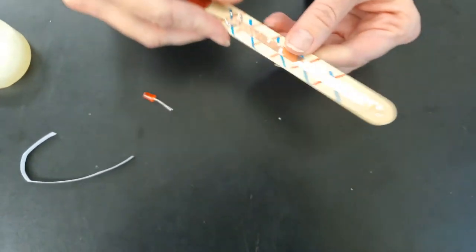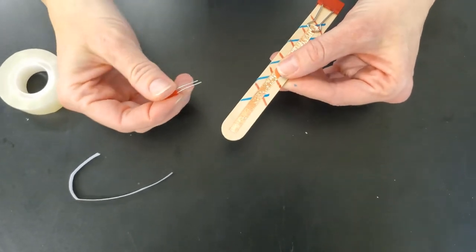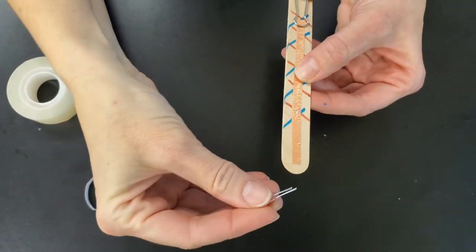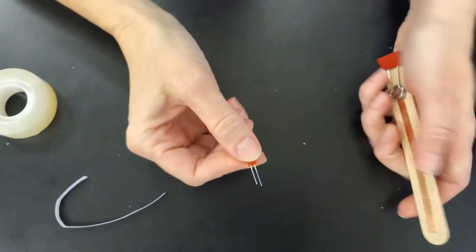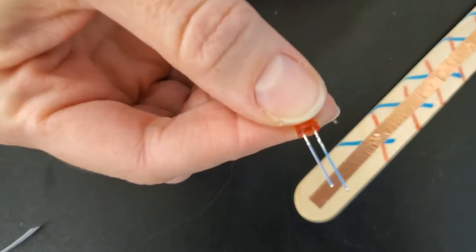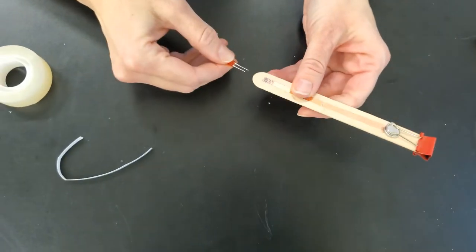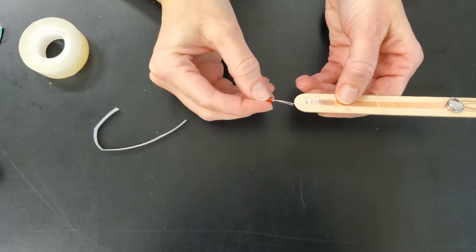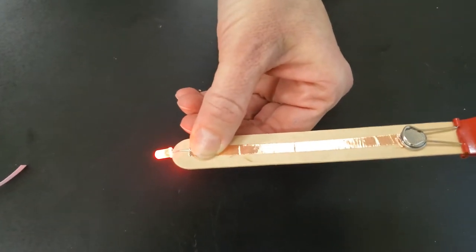Now it's time to add our light bulb. When you are working with electricity, you've got to make sure the positive and negative sides are lined up correctly. This is the cathode and this is the anode. The cathode on an LED light bulb is longer, the anode is shorter. In order for us to complete our circuit and get that light bulb to light up, the cathode side is going to be on the side with the battery and the anode side will be on the other side.